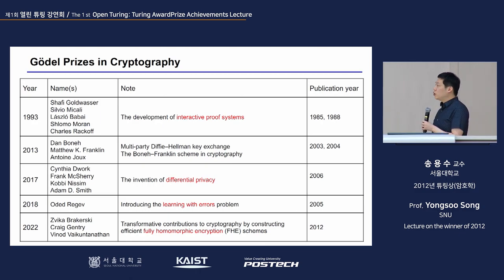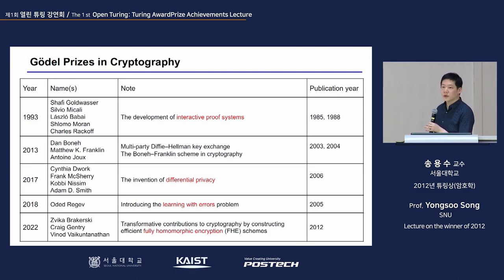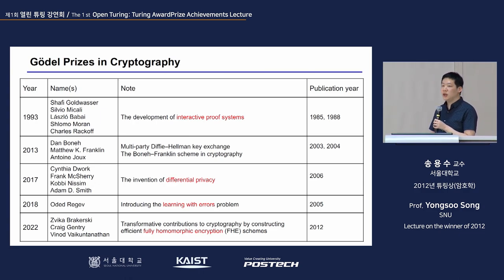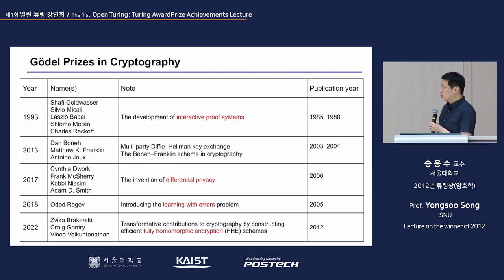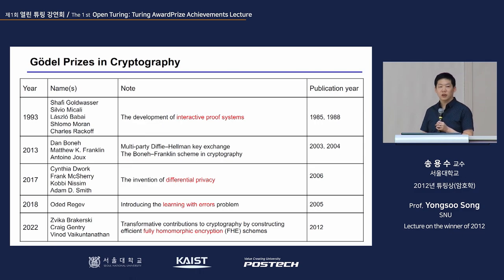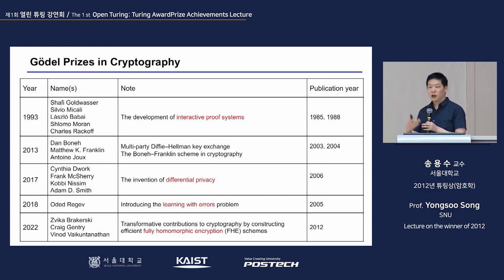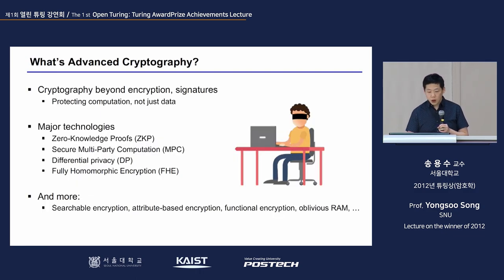Goldwasser and Micali's second Turing Award contribution was the interactive proof system. The Gödel Prize already awarded them for this in 1993, well before the Turing Award. After that, the field advanced into differential privacy, learning with errors, and other topics — things that were picked up by Gödel Prizes much earlier than by the Turing Award.